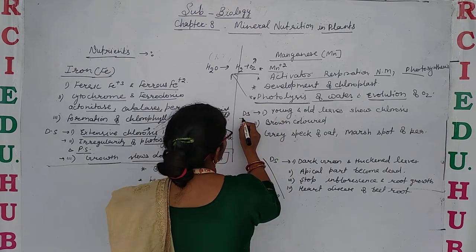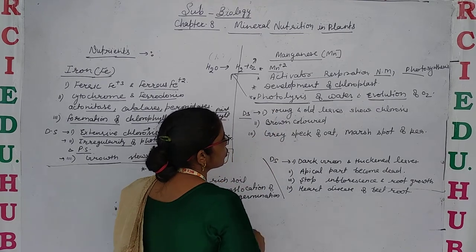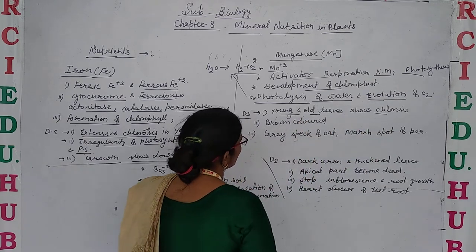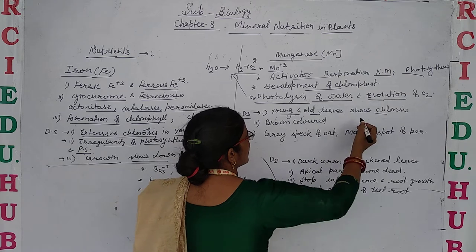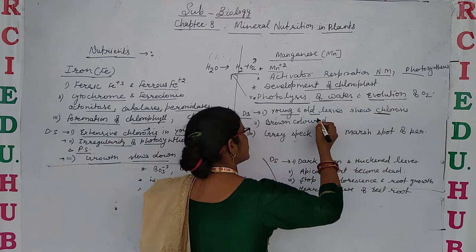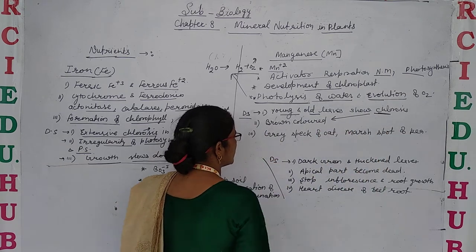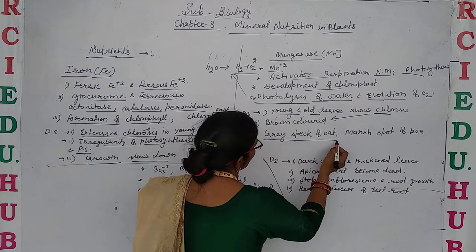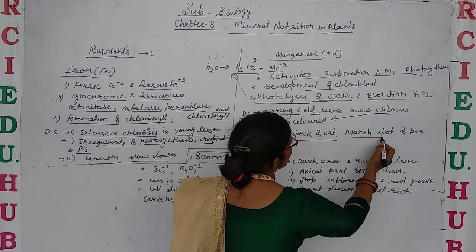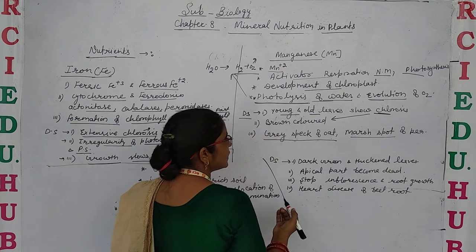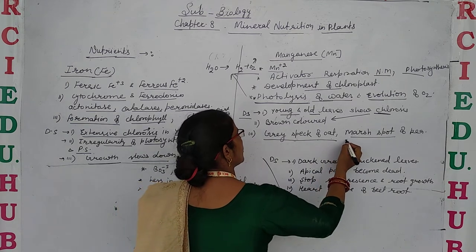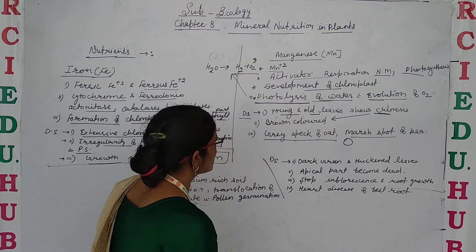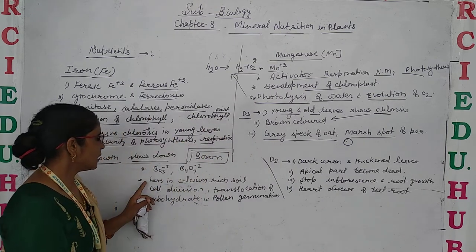Now let's discuss deficiency symptoms of manganese. Chlorosis appears in both young and old leaves, and later due to chlorosis, leaves turn brown in color. The main diseases caused are gray speck of oat and marsh spot of pea, where the leaves of pea have brown colored spots.